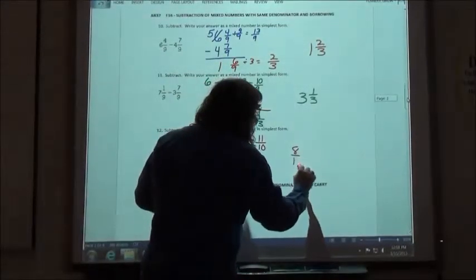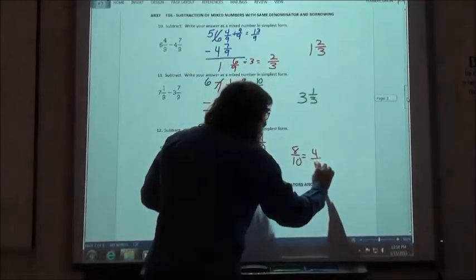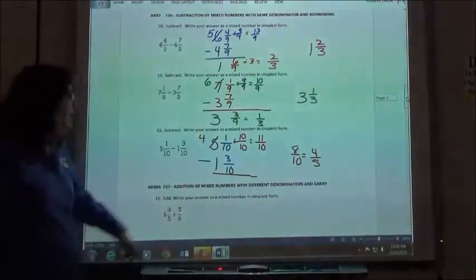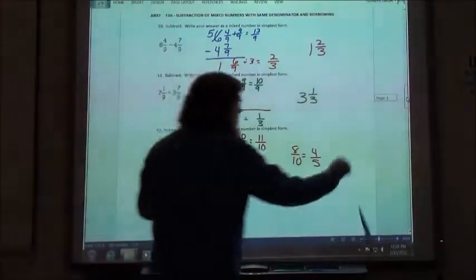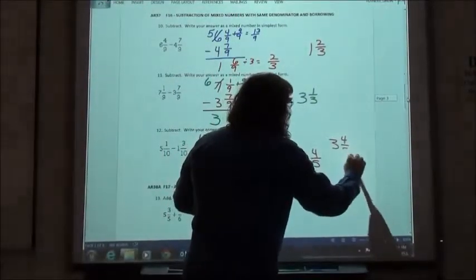Eleven minus three would be eight tenths. I'll write it over here. Eight tenths can be reduced down, so we would have four fifths. And then the four minus one would be three. So we got three and four fifths exactly.